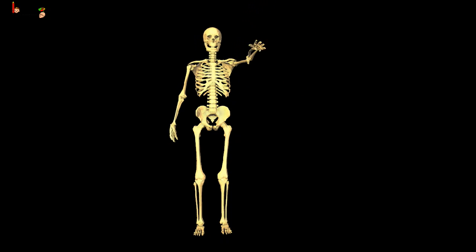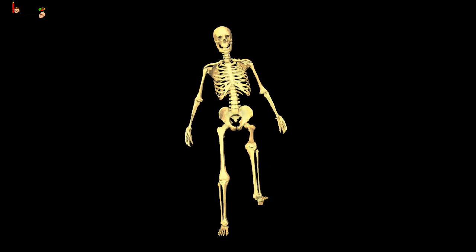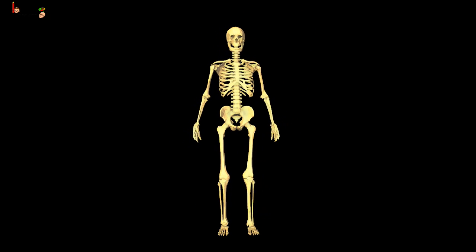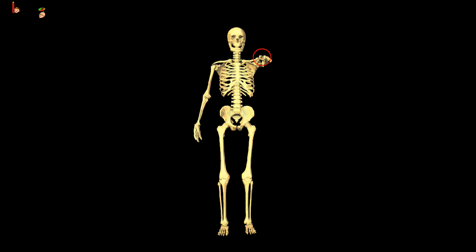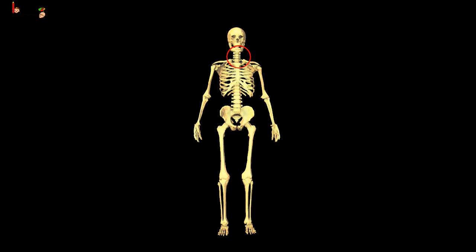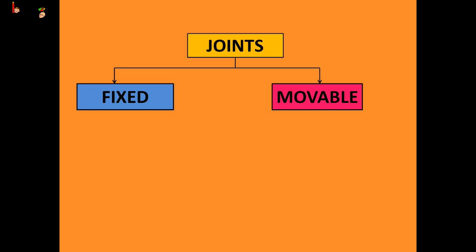The place where two or more bones are joined together is called a joint. We can bend our body around the joints. There are two kinds of joints: the fixed joint and the movable joint.